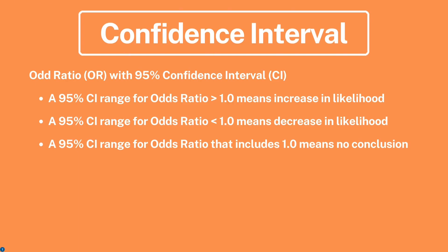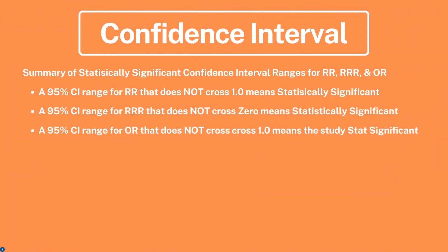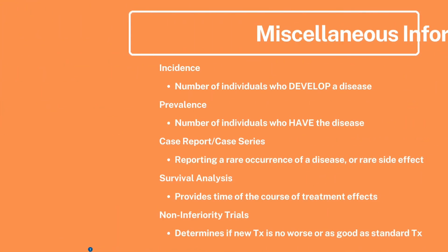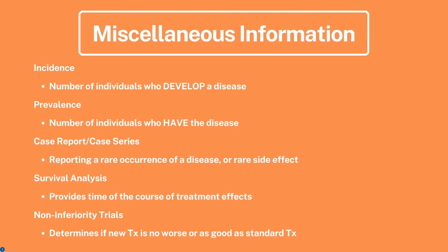For odds ratio with a 95% confidence interval: if the odds ratio is more than one, it increases the likelihood; if less than one, it decreases the likelihood; if the odds ratio includes one, there is no conclusion. To recap: a 95% confidence interval range for relative risk that does not cross one is statistically significant, and a 95% confidence interval range for odds ratio that does not cross one is also statistically significant.